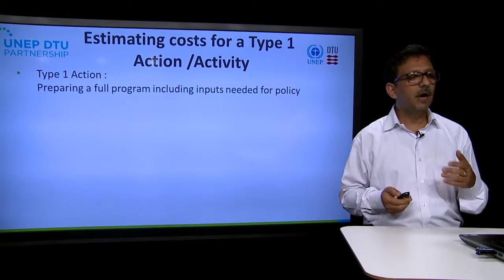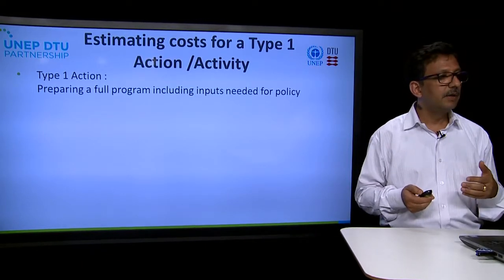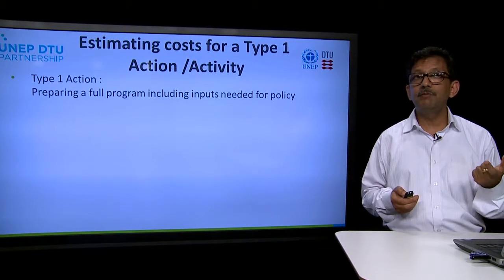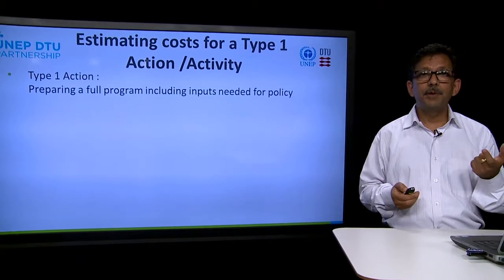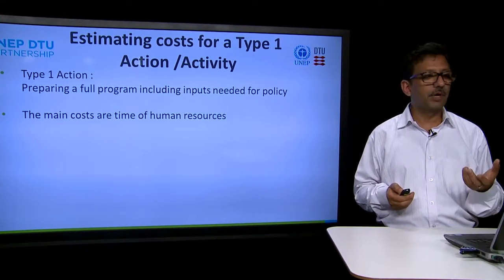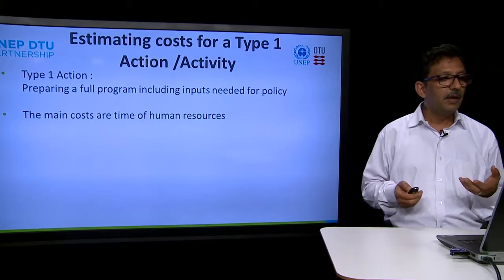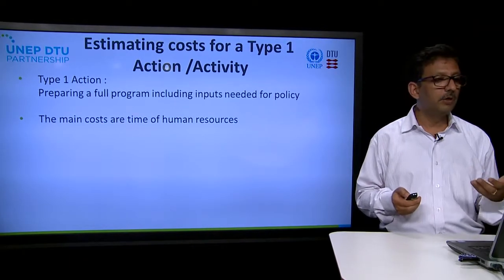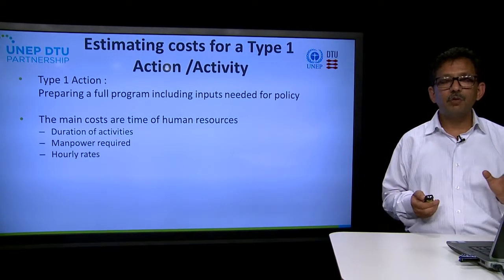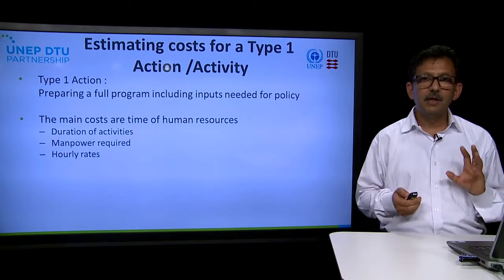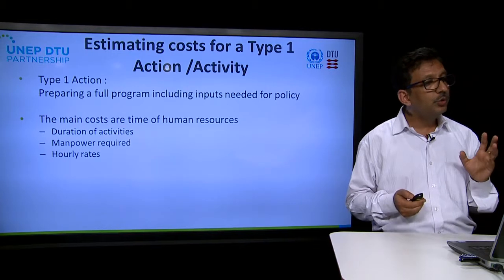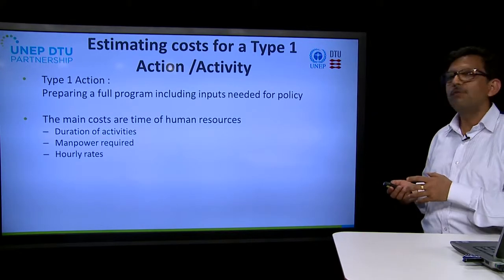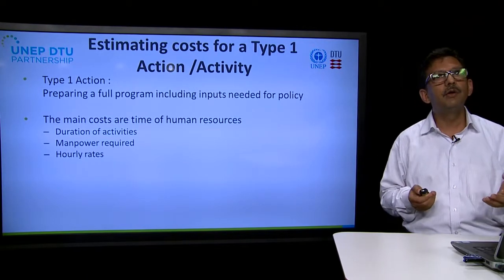Let us look at how to estimate the cost of type 1 activities. Type 1 activities are those where we are talking about preparing a full program, not the implementation of that activity. Therefore, the main cost for such actions and activities is human resources. When we talk of human resources, we have to think about three things: the duration of activities, the manpower required for those activities, and the hourly rates, because these will vary from country to country.